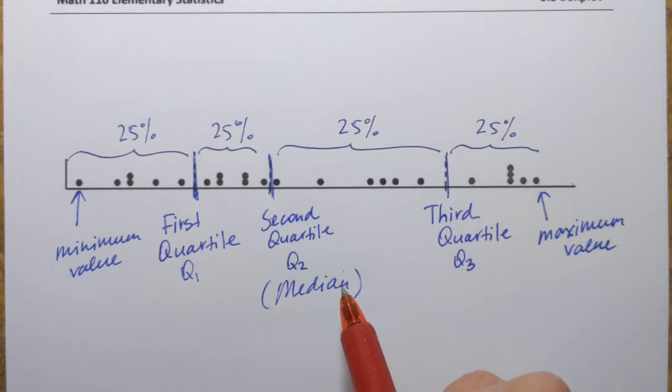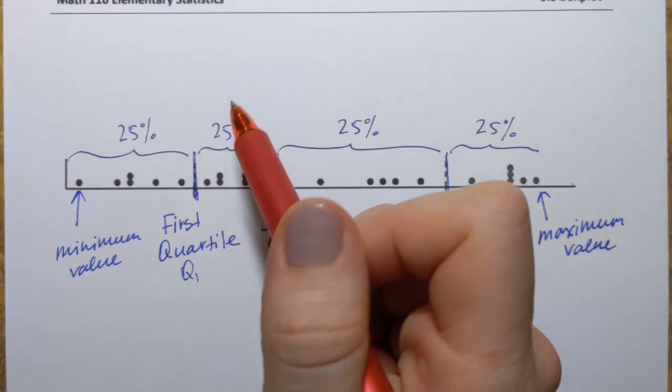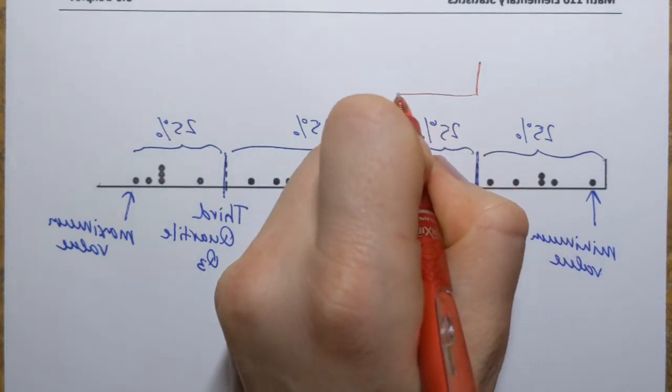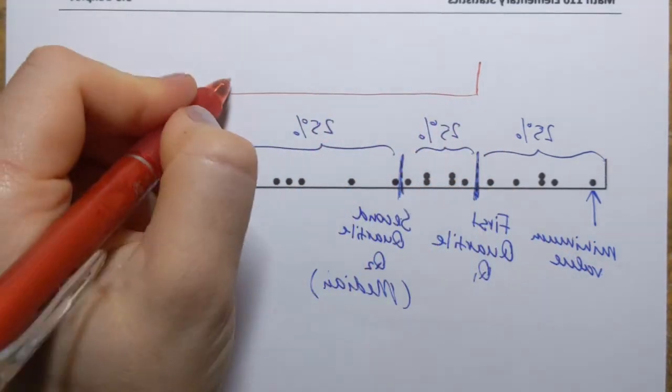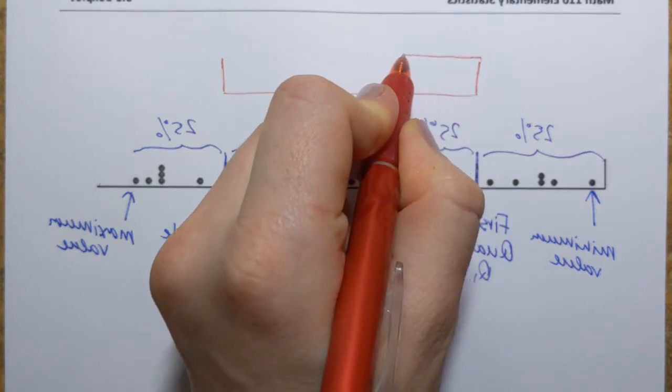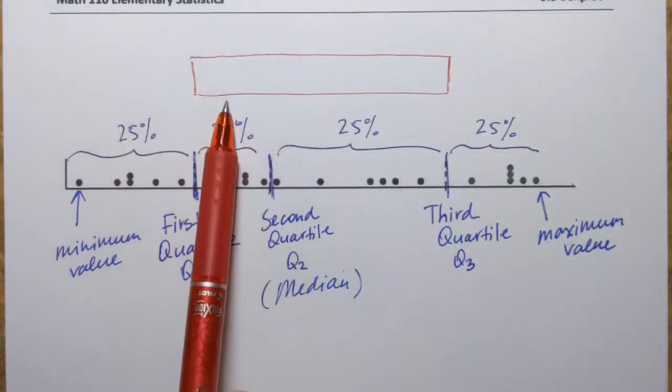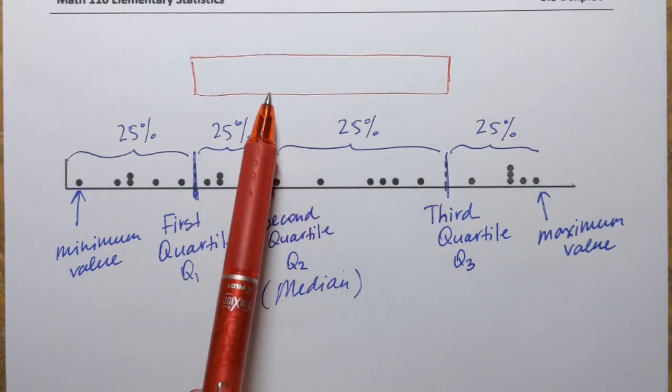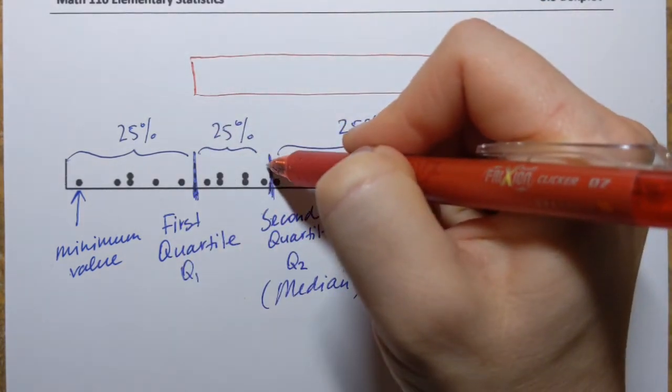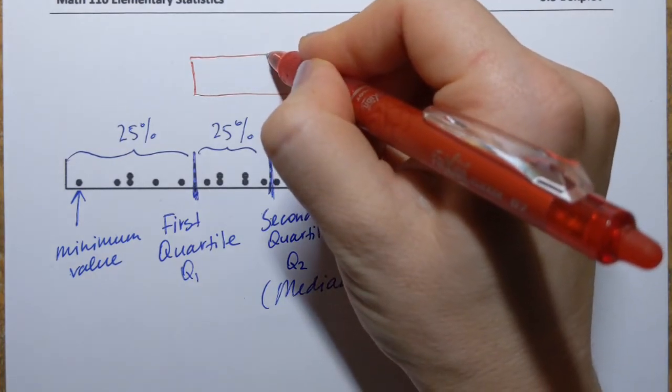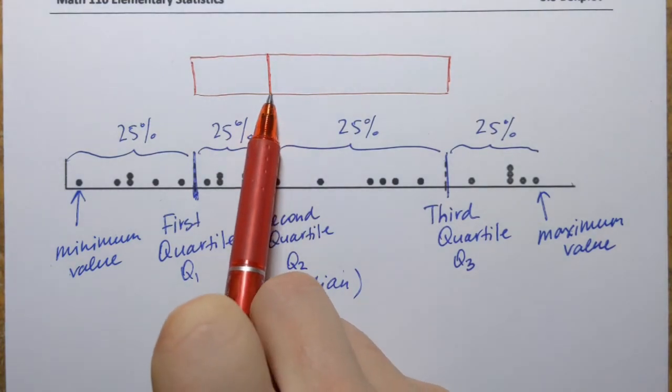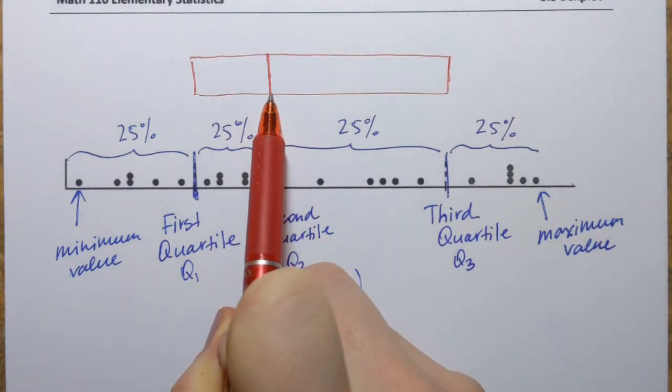As you can guess from the name, box plot will have a box. This is how the box is constructed. That's pretty much a rectangle that starts at Q1 and stretches all the way to Q3. In other words, it indicates how spread our data values between Q1 and Q3. But we're also going to put a vertical line where Q2 is or where the median is right here. So it also indicates the position of the median, which is Q2.